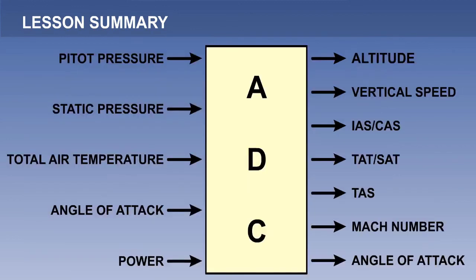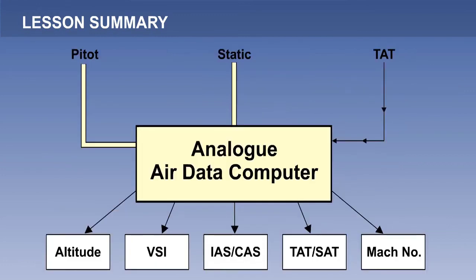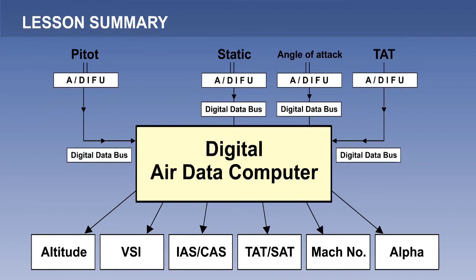The basic five inputs to a modern ADC are pitot, static, total air temperature, angle of attack, and power. In the early days, the pressure data transmission lines were pitot and static tubes. Later systems used remote transducers and sent the source data to the ADC by wire. Modern systems use digital computers and digital data transmission, and include angle of attack information.